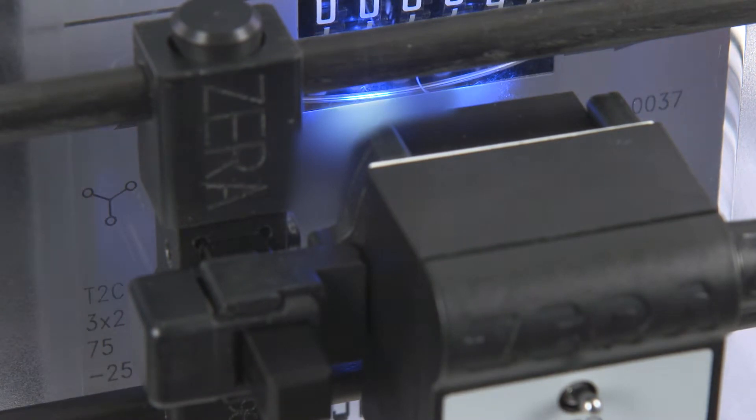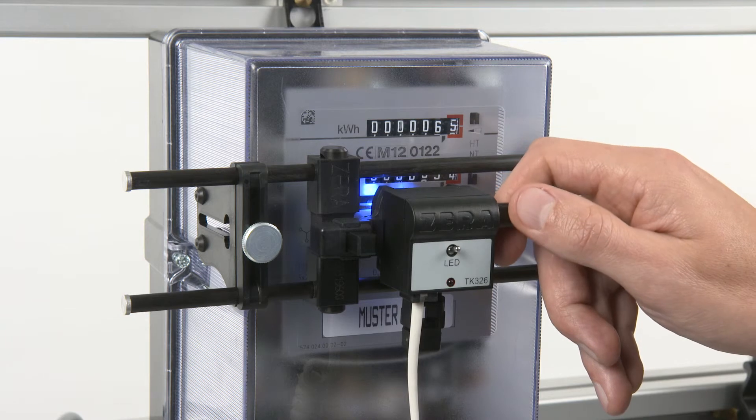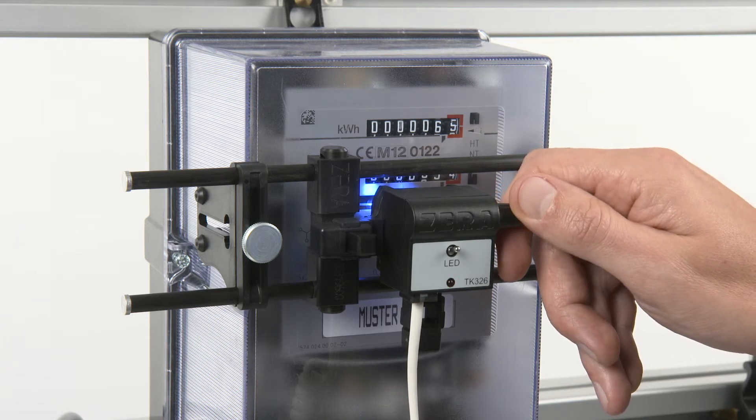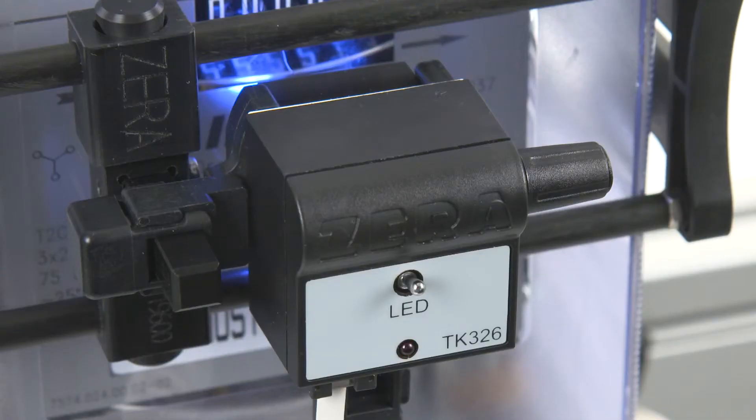After that, adjust the sensitivity of the scanning head again. Pay attention that the scanning head does not detect multiple pulses. In this case, adjust the potentiometer again. Verify the setting by a complete rotor turn.